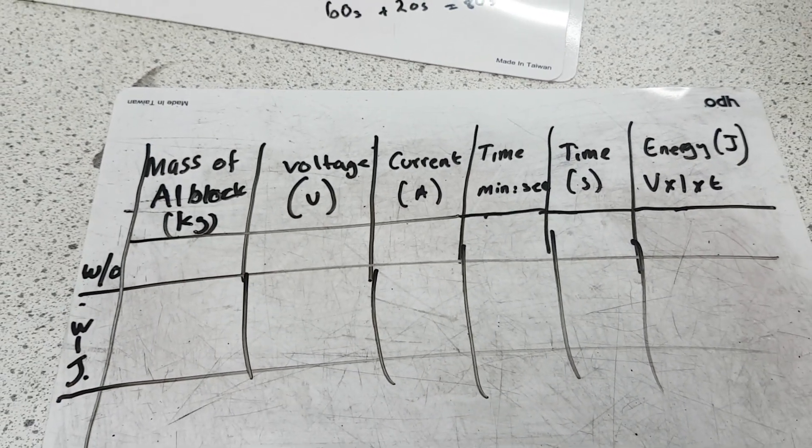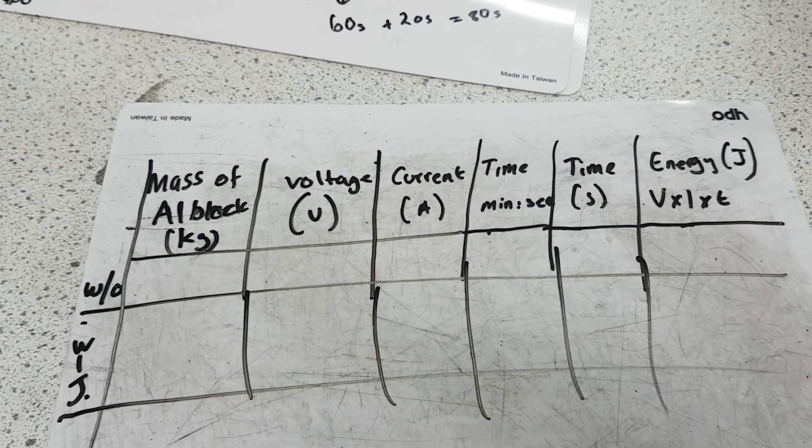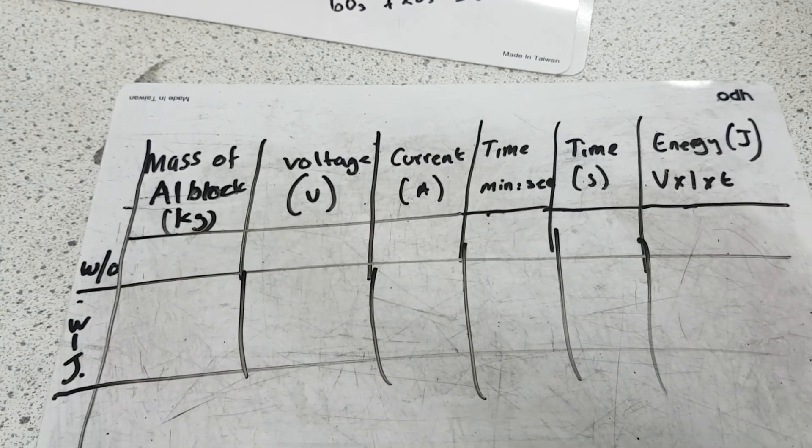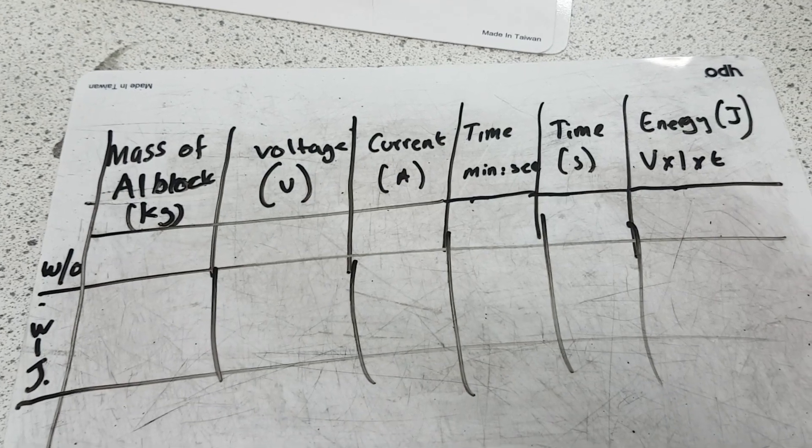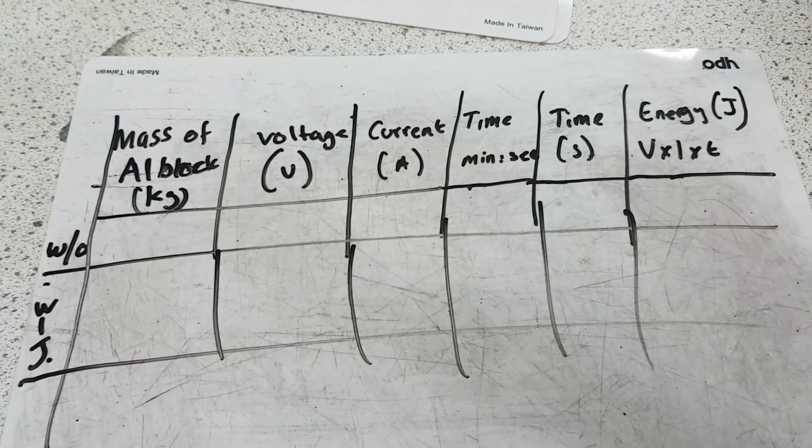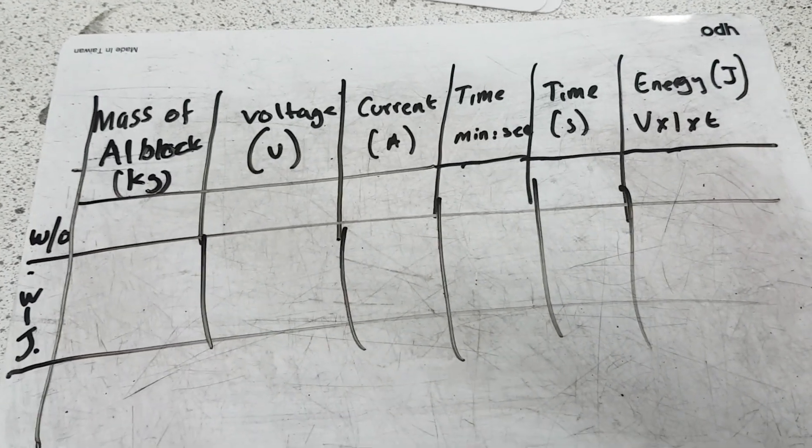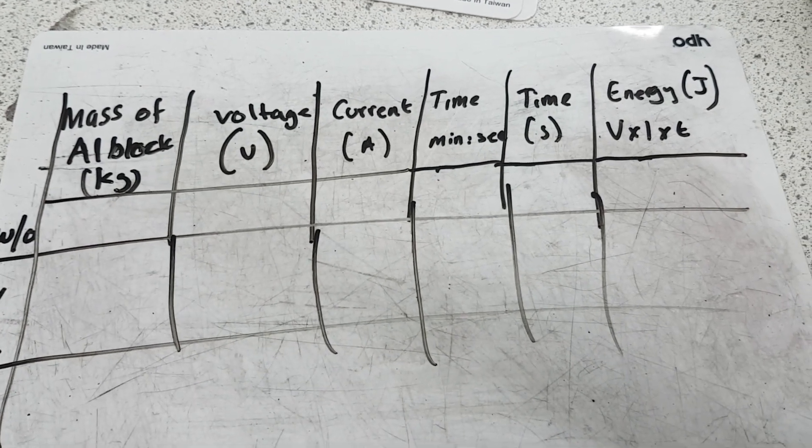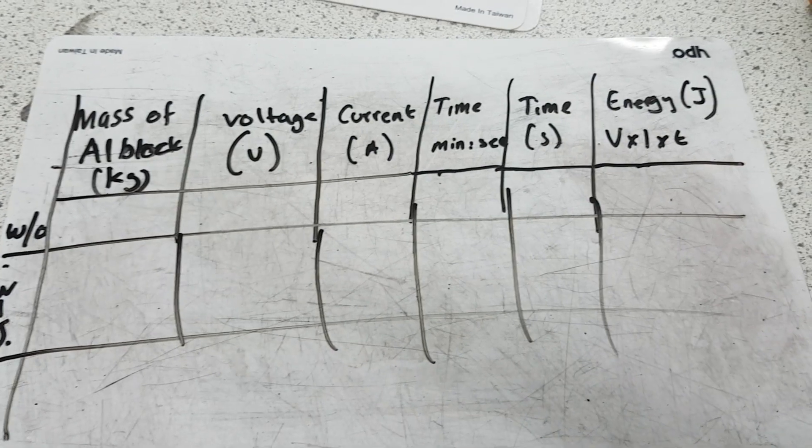And then you'll need to analyze your data and compare it to the real value for the specific heat capacity of aluminum and see perhaps why your results are not in line with the expected results. And it's okay to be wrong, but the question is, how wrong are you?